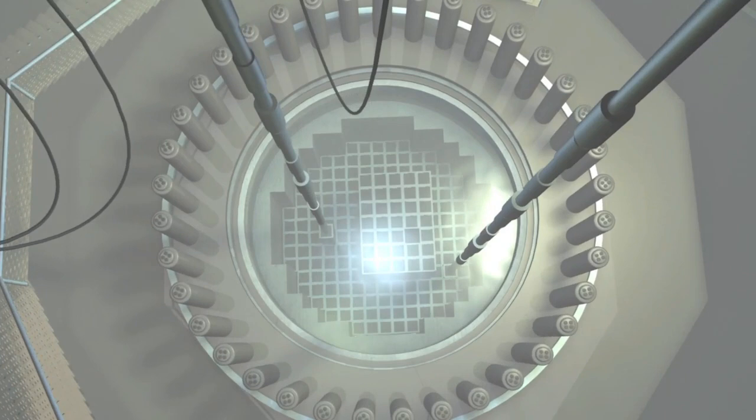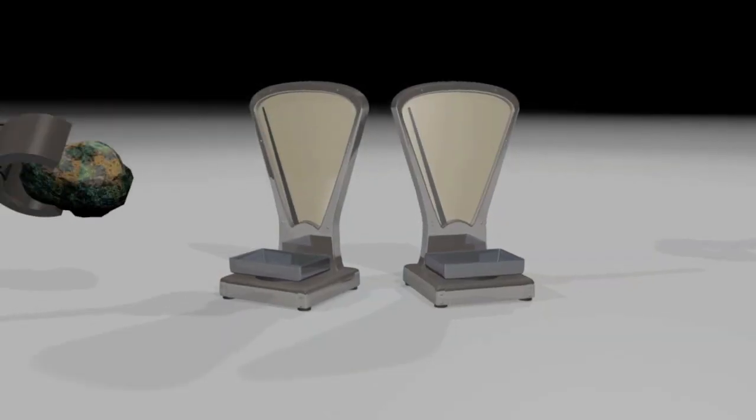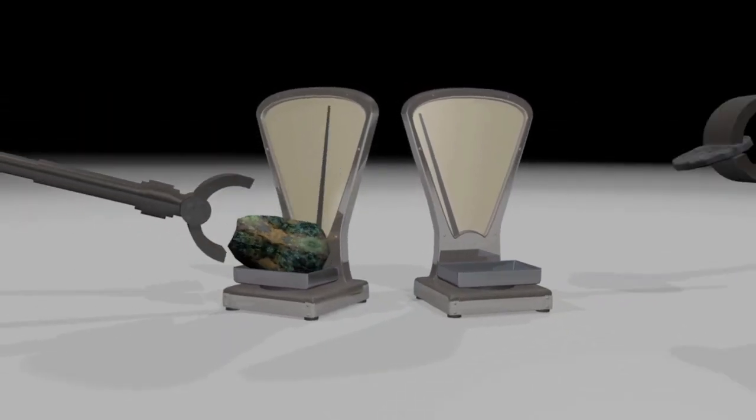It takes some 25 kg of uranium-235 or 8 kg of plutonium-239 to make a nuclear bomb.